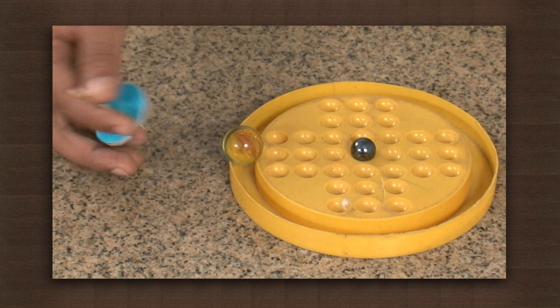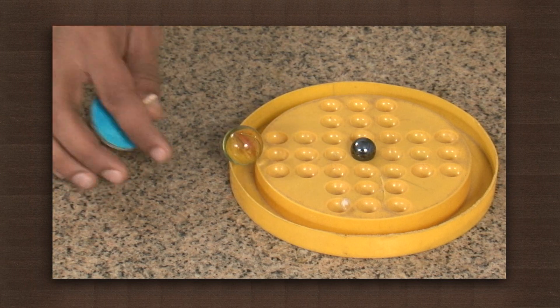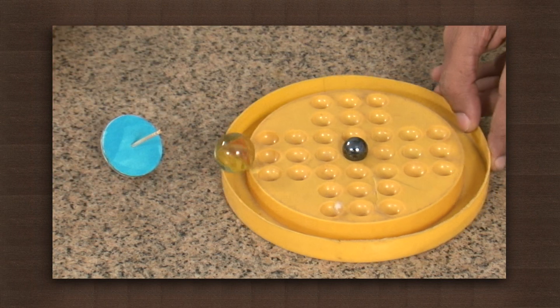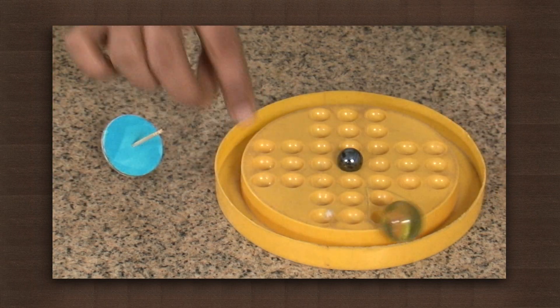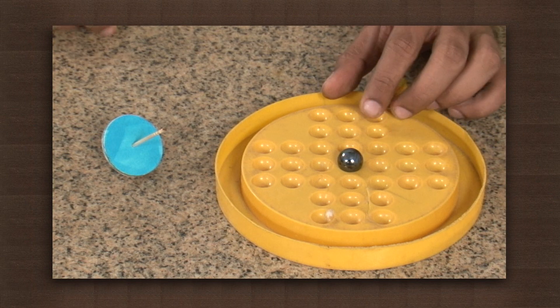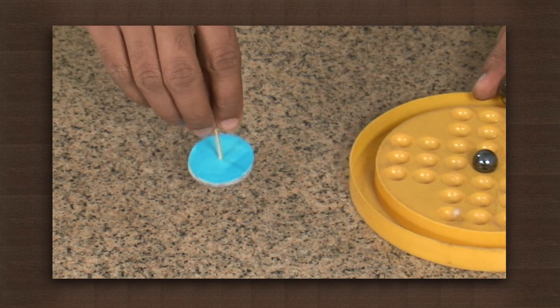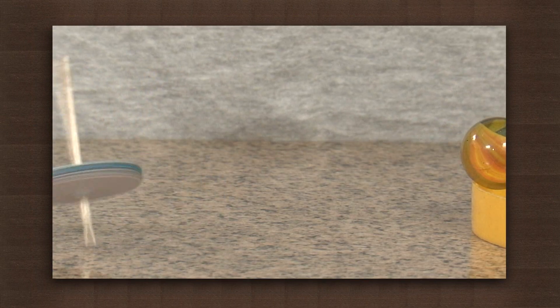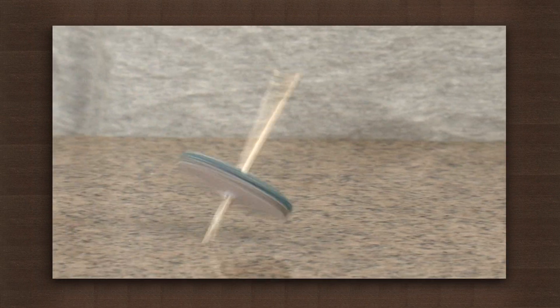We will need a spinning top, which we have made with a toothpick and cut out of card paper, marbles and a circular track. First, we will take the top and rotate it on this surface here.